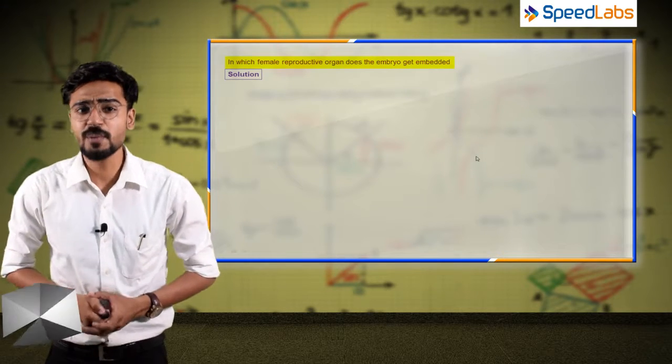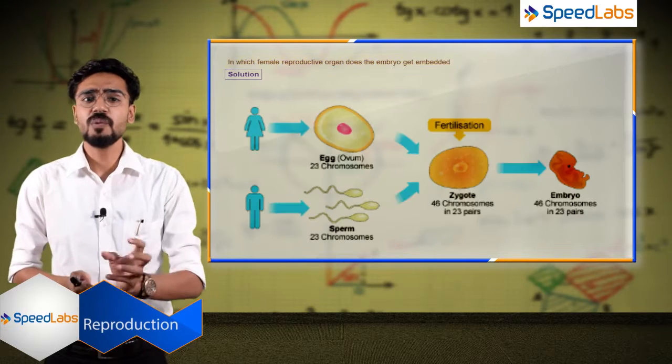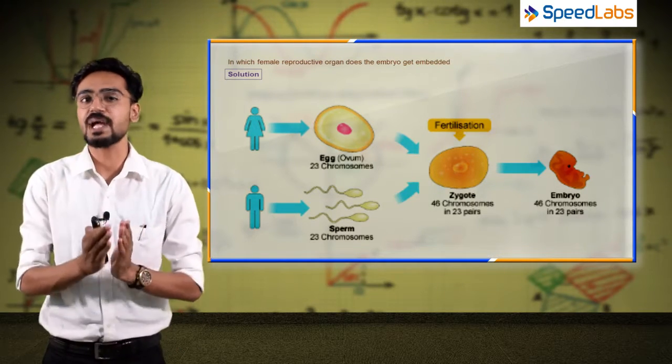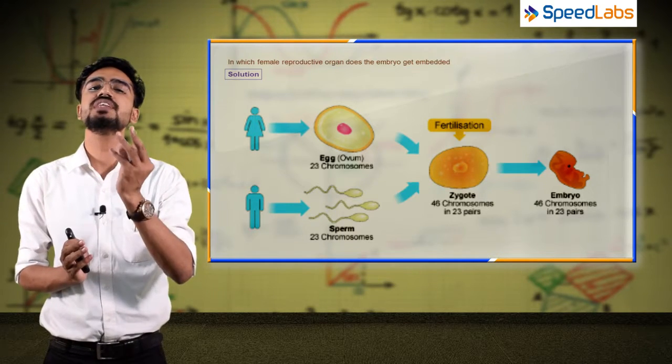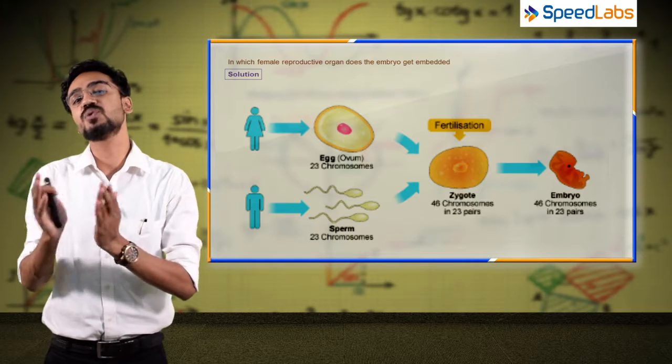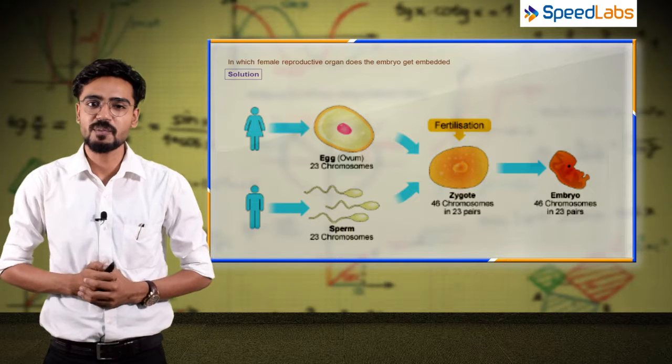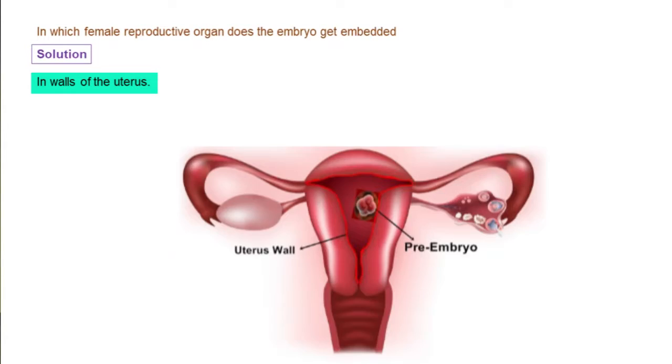So now in which female reproductive organ does the embryo get embedded? What is an embryo? An embryo is called when male gametes and female gametes fuse, which forms a zygote. And the zygote divides, so that is known as an embryo. So where does it attach? It gets attached in the walls of the uterus.